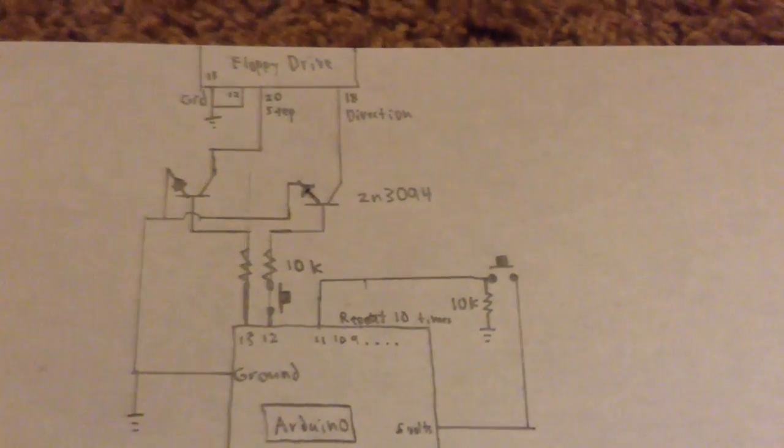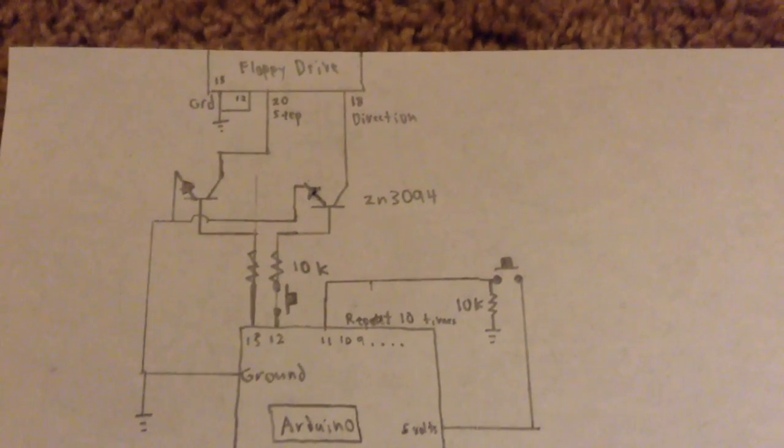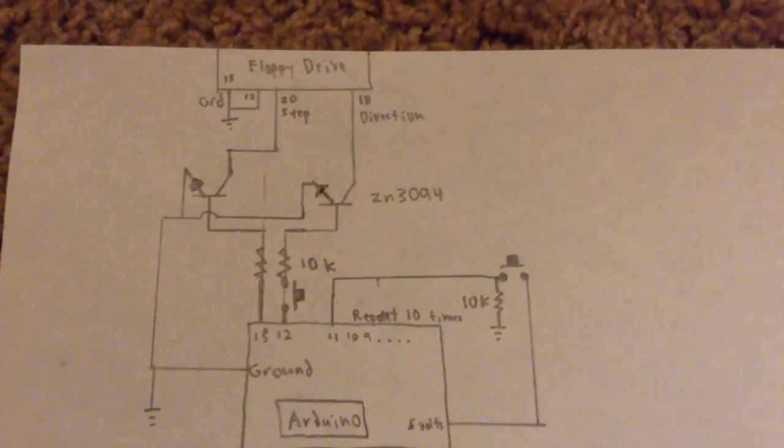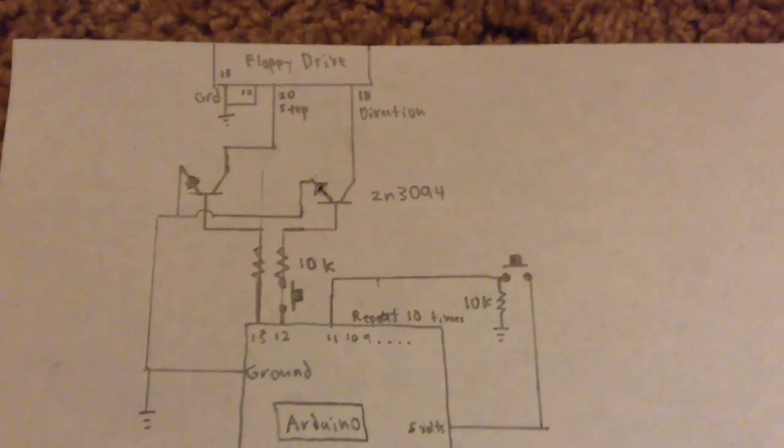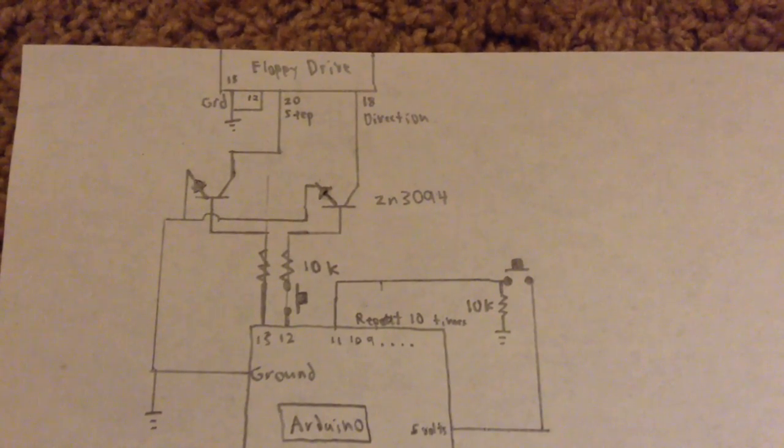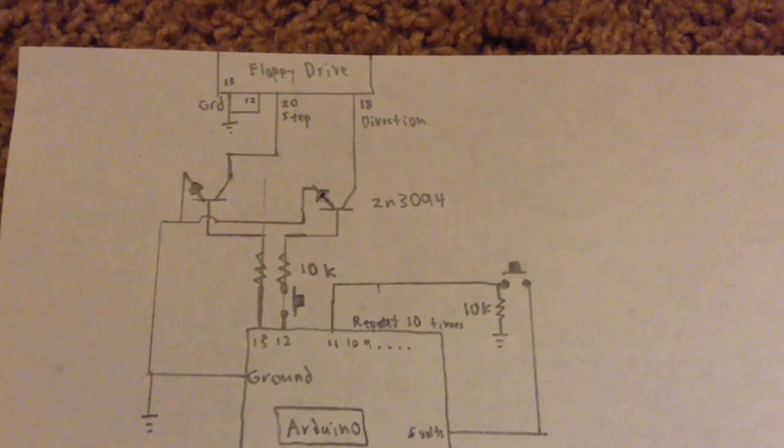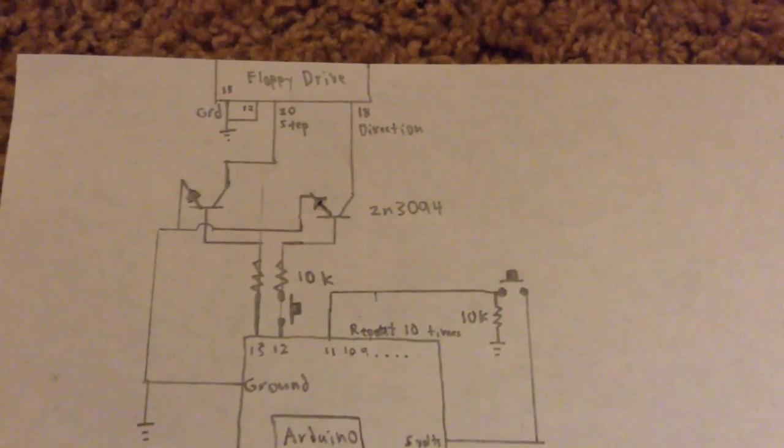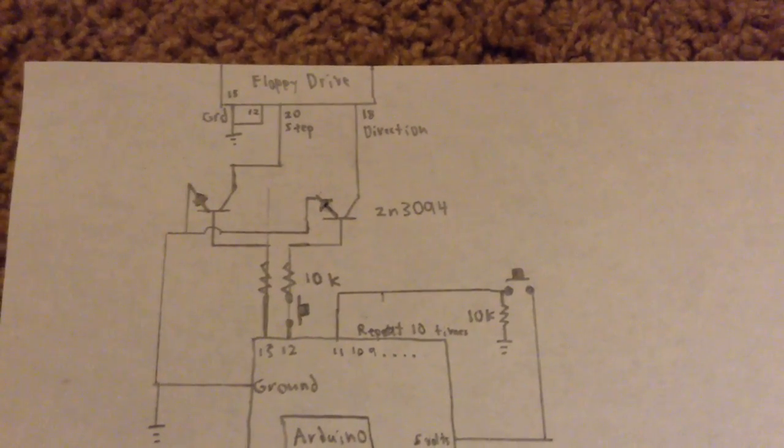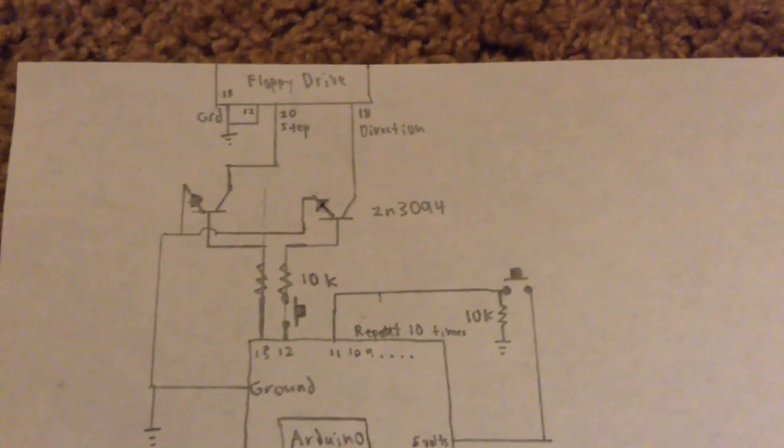What I did is I used a 10kΩ resistor to connect the transistor base to the pins of the Arduino. Then, I put the emitters of both transistors to ground of the Arduino and the floppy drive. The collectors of the transistors I put to each pin on the floppy drive that needs connecting.